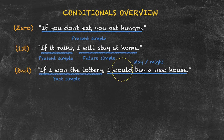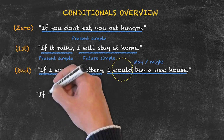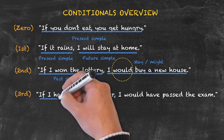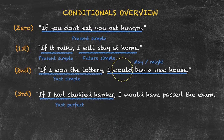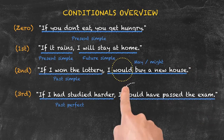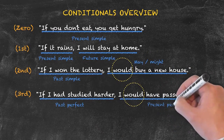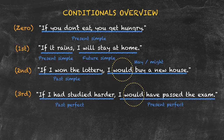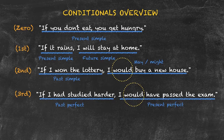Our next example sentence: 'if I had studied harder, I would have passed the exam.' This is an example of the third conditional. In the if clause we have the past perfect tense; in the other clause we use the modal verb 'would' with the perfect form after it — 'have passed.' This is the past hypothetical conditional. Both clauses talk about the past: 'if I had studied harder in the past, I would have passed the exam in the past.' Both are hypothetical because they didn't happen — 'if I had studied harder, but I didn't; I would have passed the exam, but I didn't.'